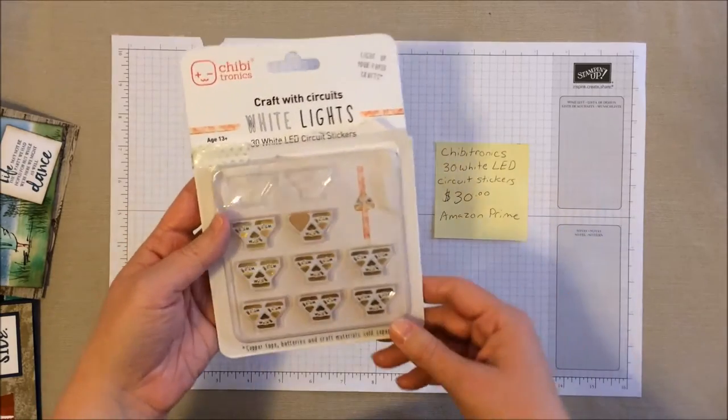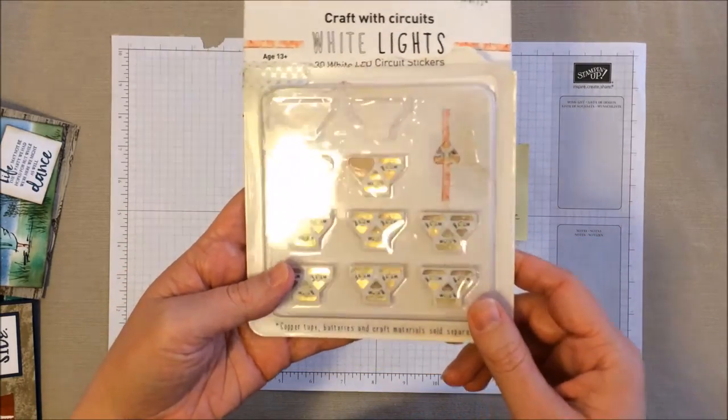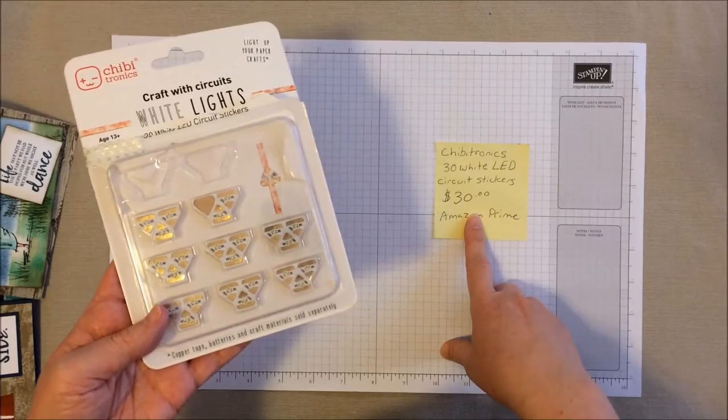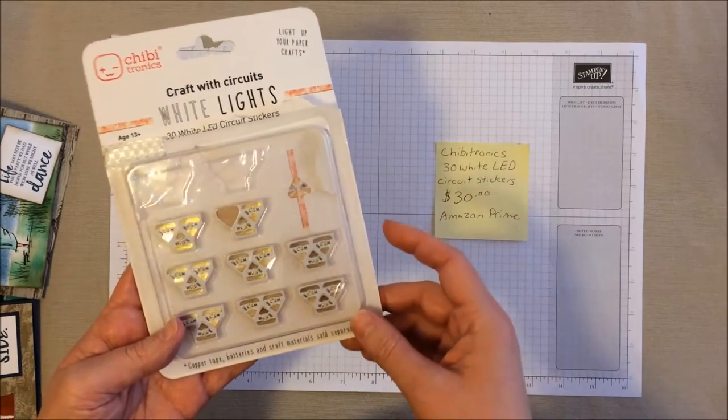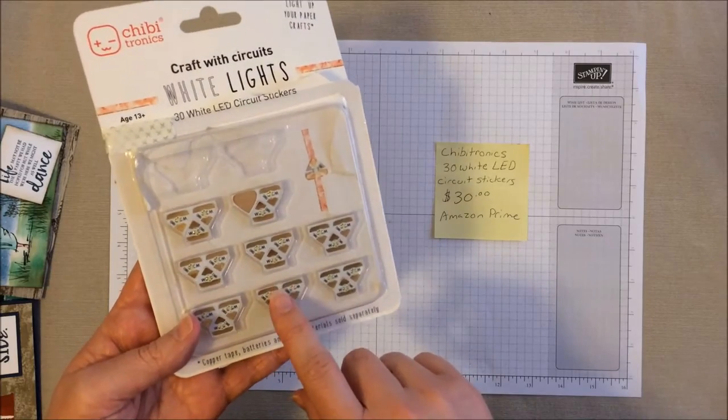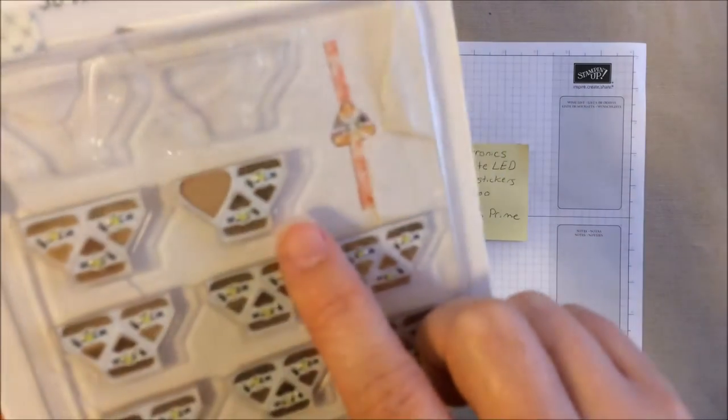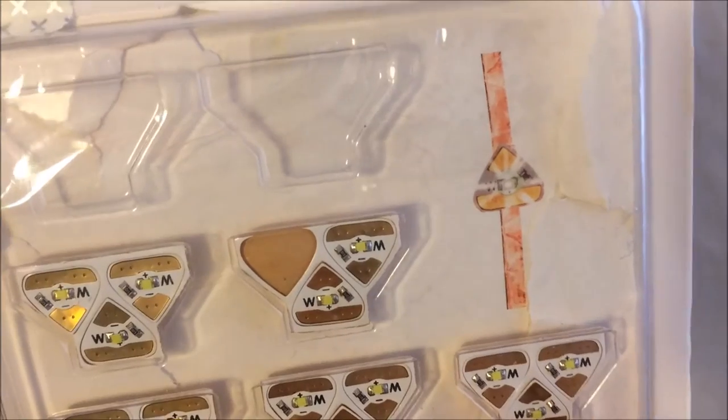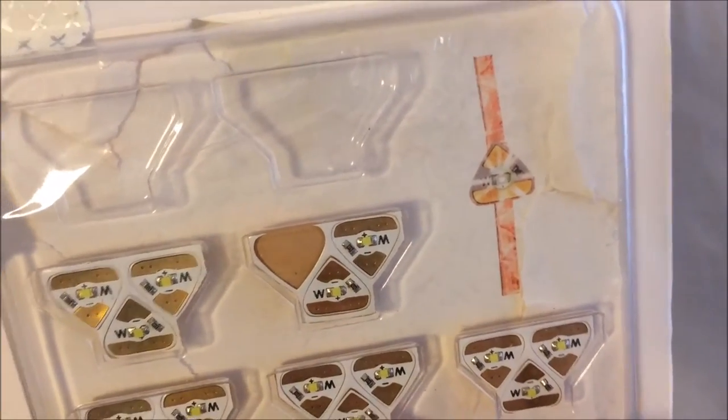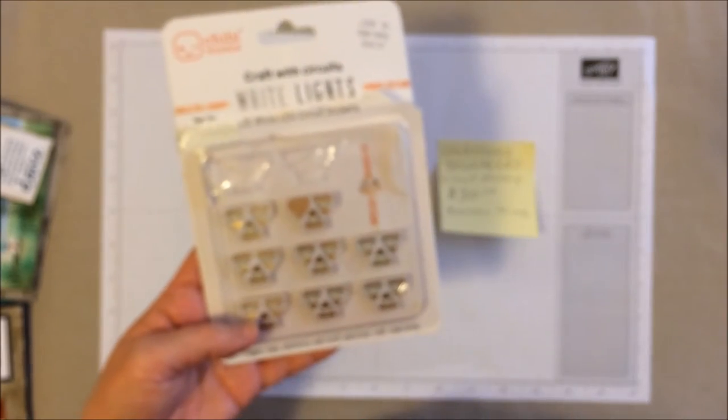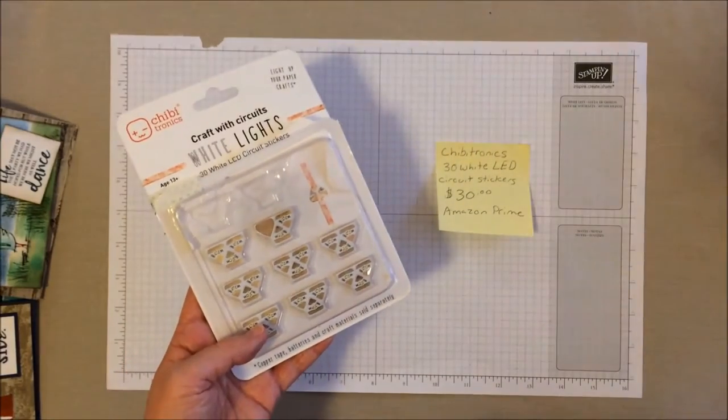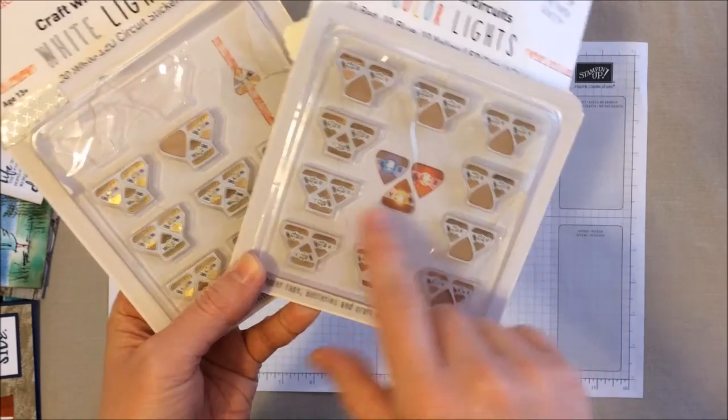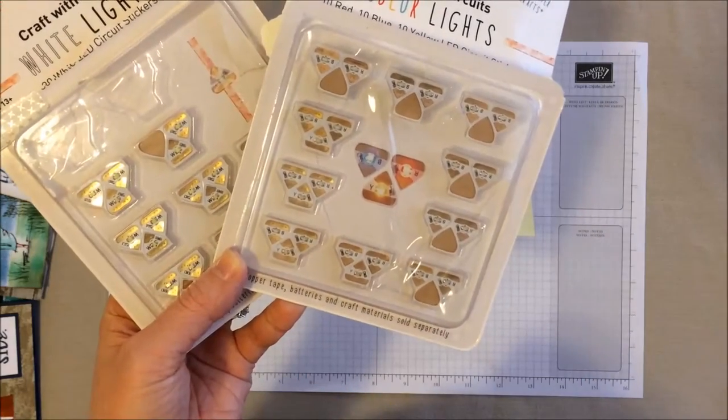So this other thing that I tend to use is their LED circuit stickers. Now these are awesome. So you can get them in packs of 30, 30 bucks off Amazon and it's Prime eligible for those that are Prime members. These are just peel and stick and are so easy to use. They have these tiny, tiny little lights, little LED lights. So perfect for cards because they're just the right size. So these I absolutely love. And they also have them available in a few other colors as well. Blue, yellow, and red. So these are just a pack of the white and they've got some colors as well.